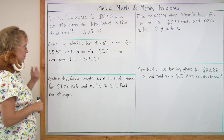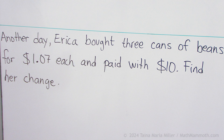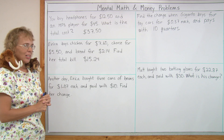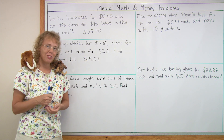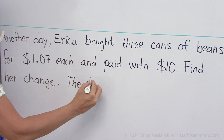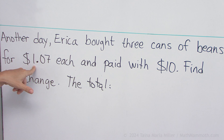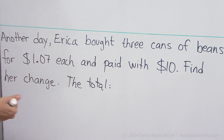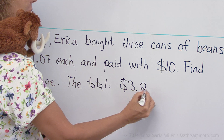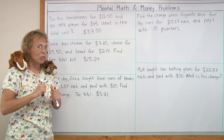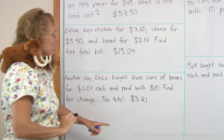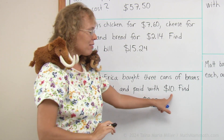Another day Erica went shopping again. Erica bought three cans of beans for $1.07 each and paid with $10. Find her change. Before we find the change, we of course find the total bill. There are three cans of beans, so we go three times this amount. You can multiply three times one and then multiply three times seven. So we should get $3 and 21 cents — $3.21. Now for the change, you remember counting up: we start with this number and add up till we reach $10.